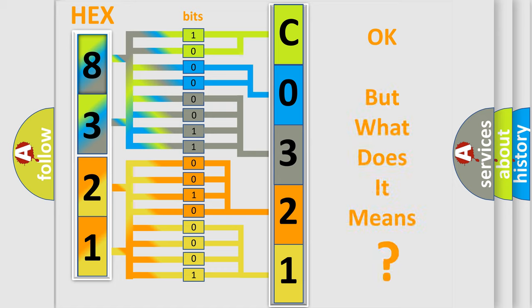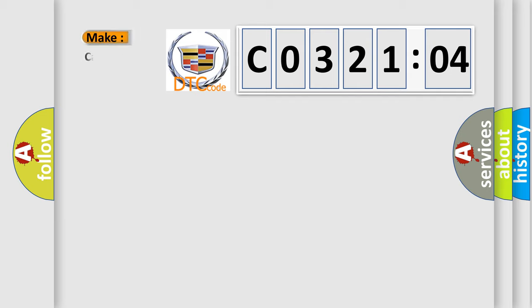We now know in what way the diagnostic tool translates the received information into a more comprehensible format. The number itself does not make sense to us if we cannot assign information about what it actually expresses. So, what does the diagnostic trouble code C0321:04 interpret specifically for Cadillac car manufacturers?